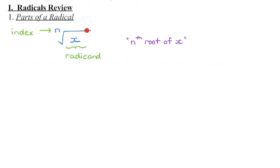This is the radical symbol. This little number up top here is what we call the index. It indicates the type of radical we have. So if this is a 2, we have a square root. If this is a 3, we have a cubed root. If this is a 4, we have a fourth root, and so on.